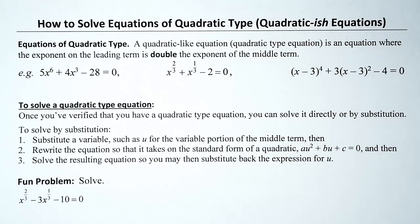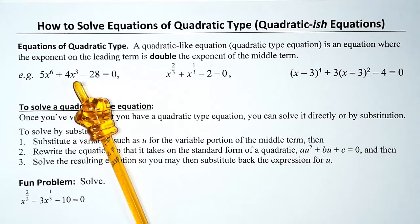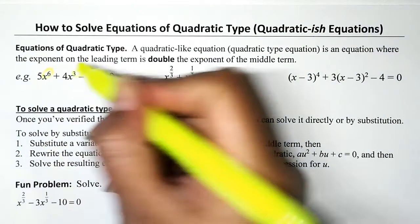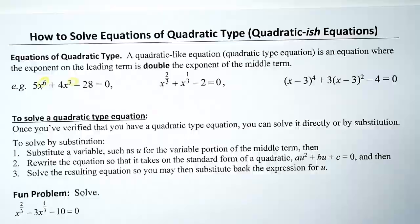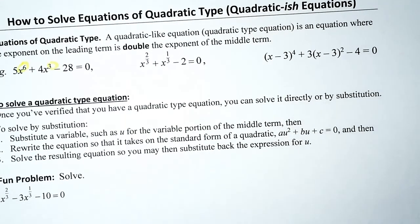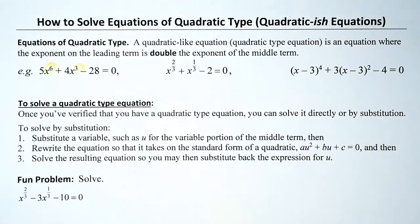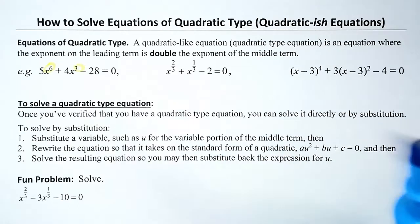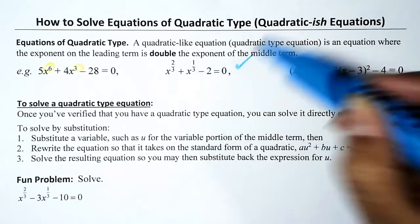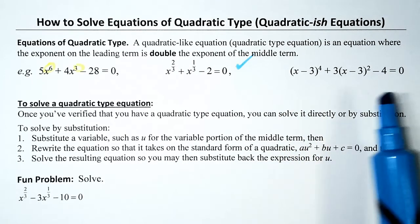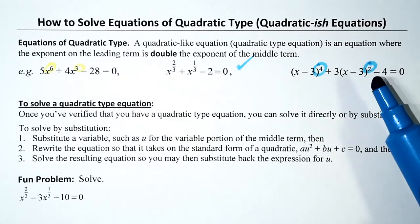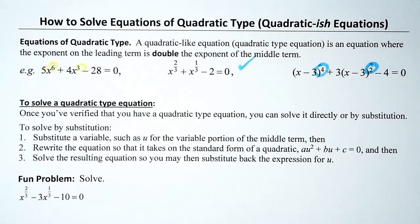We have a quadratic-like equation if the first exponent is twice the second exponent. For our first example, is the first exponent twice the second? Yes, because six is twice three. For our second example with exponents two-thirds and one-third: one-third times two equals two-thirds, so yes. A final example: four is twice two, so that's also a quadratic-like equation.